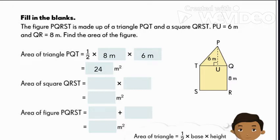Now take note that in getting the formula for area of the triangle, it can be simplified like this. So the area is equal to base times height divided by 2. Now let's move on to the area of the square QRST.